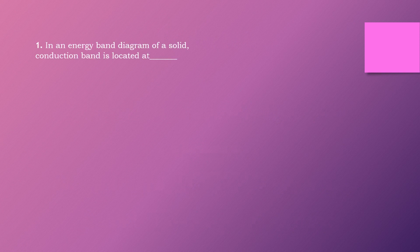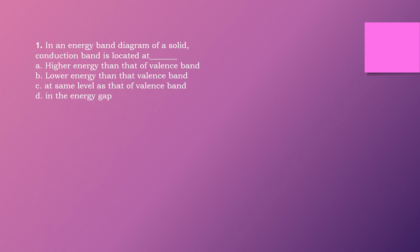Question one: In an energy band diagram of a solid, the conduction band is located at dash. Options are: higher energy than that of valence band, lower energy than that of valence band, at the same level as that of valence band, in an energy gap. The right answer is option A: higher energy than that of valence band.